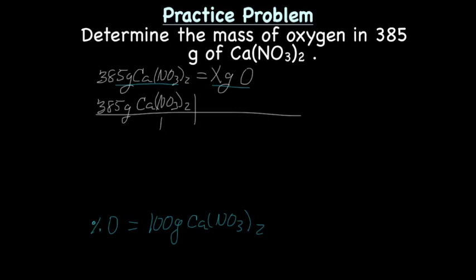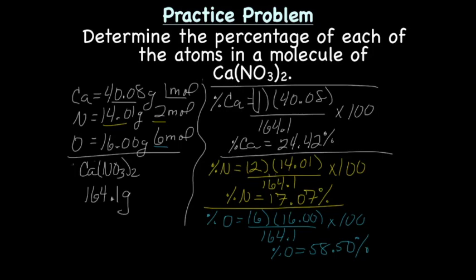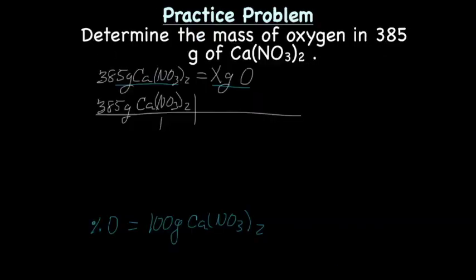Alright, and we did this, right? We just did this problem, right here, and the percent mass of oxygen was 58.50%. And we're going to change that, we're just going to make that 58.50, drop the percent sign. So, equals 58.50 grams of oxygen. Alright, now, put this thing in the grid.